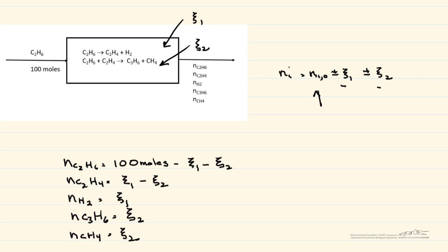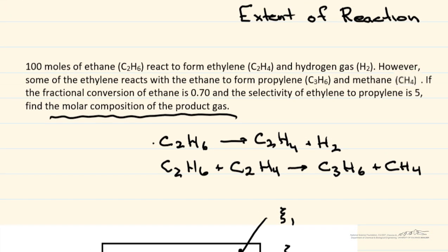We have seven unknowns: the five product stream molar flows and the two extents of reaction ξ₁ and ξ₂. Therefore, we need two more equations. Going back to the problem statement, we have the fractional conversion of ethane equal to 0.7 and the selectivity of ethylene to propylene equal to 5.